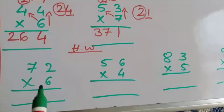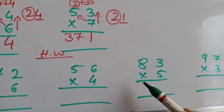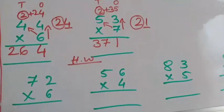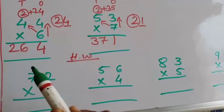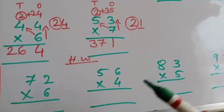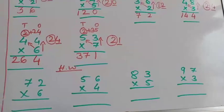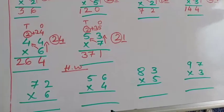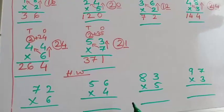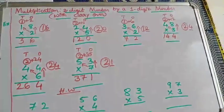The homework problems are: first, 72 into 6; second, 56 into 4; third, 83 into 5; and the next one, 97 into 3. Very important — you have to follow the method: write ones place and tens place, after that circle the carry over, and follow all the steps including the arrow mark. So I hope you all understood this method easily. See you in the next class with the exercise. Till then, practice and learn the tables and practice the sums. Take care and bye bye. Thank you.